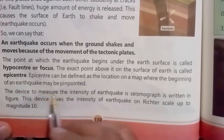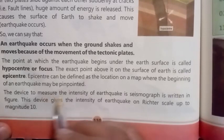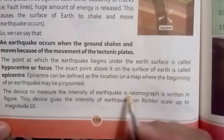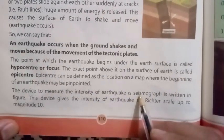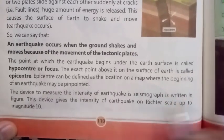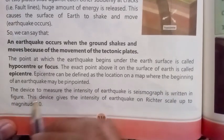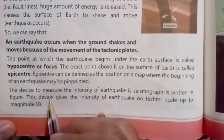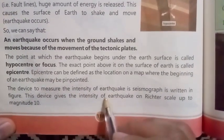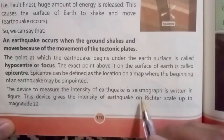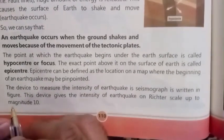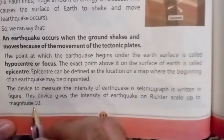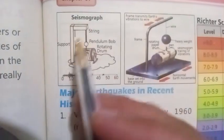The device used to measure the intensity of an earthquake is called a seismograph, as shown in the figure. This device gives the intensity of the earthquake on the Richter scale up to magnitude 10.